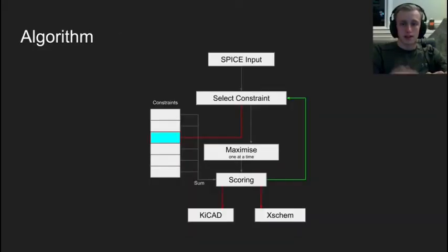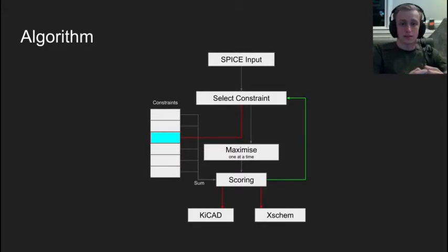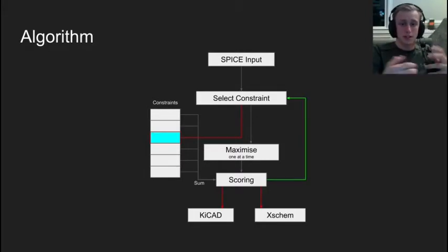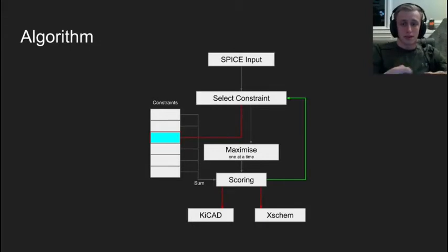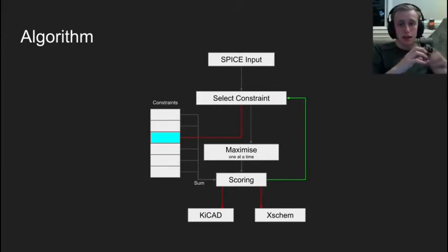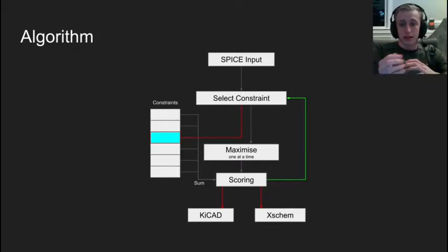The general algorithm used is to iterate over a set of constraints which represent desirable behavior for a schematic. For example, there are constraints which say components should not occupy the same space and wires should not cross if possible. Each iteration maximizes a single constraint.